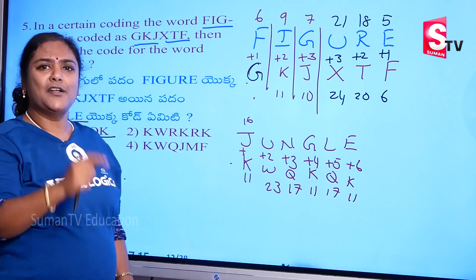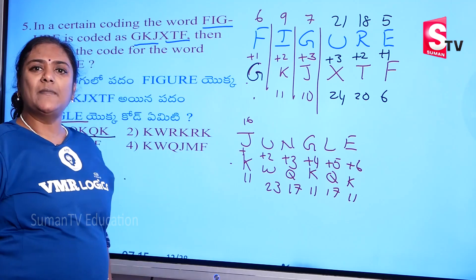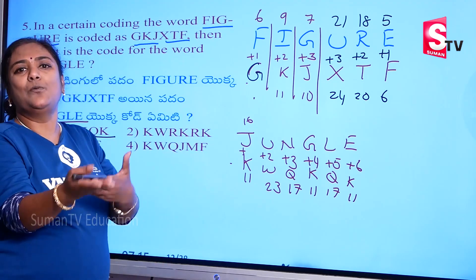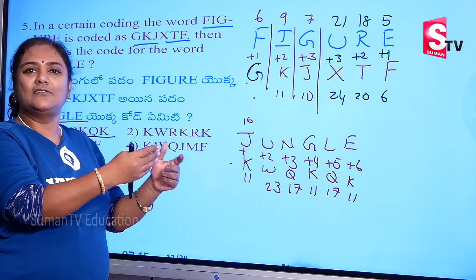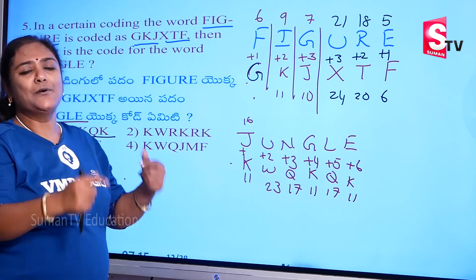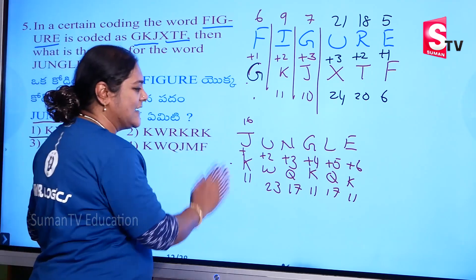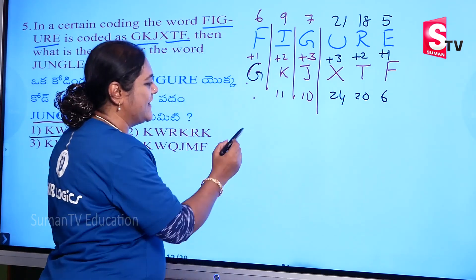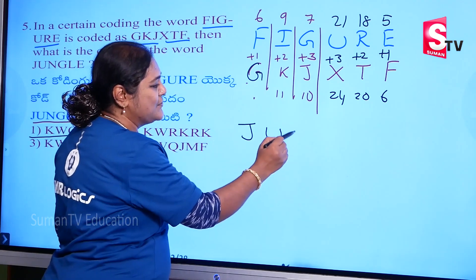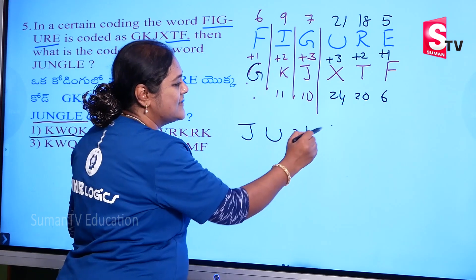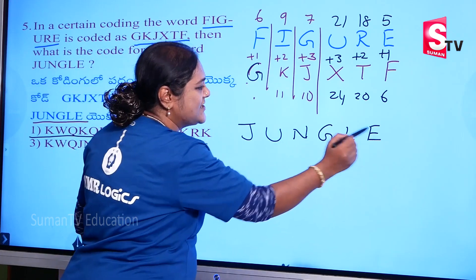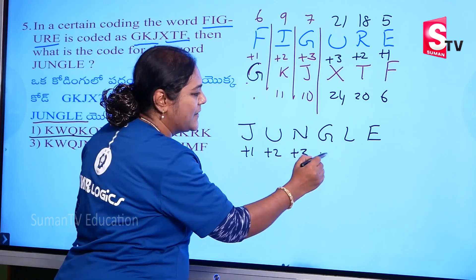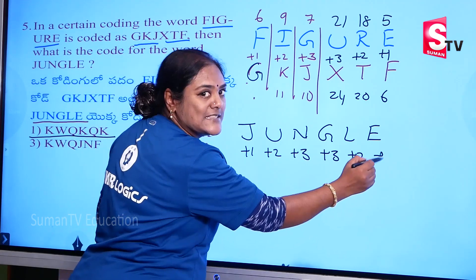The counting pattern is 1, 2, 3 in the first half, then in the second half it reverses: 3, 2, 1. So for JUNGLE: J, U, N, G, L, E — apply plus 1, plus 2, plus 3 for the first half, then plus 3, plus 2, plus 1 for the second half.